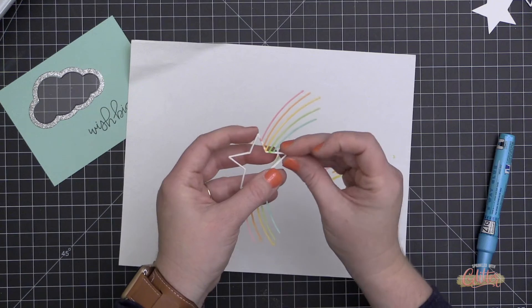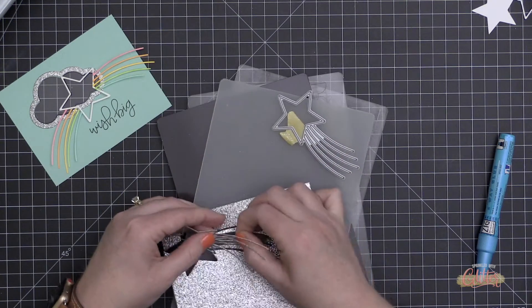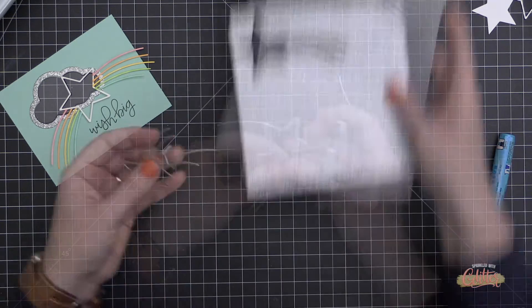Then I used some Zig Two-Way Glue Pen to stack the stars on top of each other. Because they're symmetrical, this works, and you can see I'm just kind of working it onto itself using my fingers to line up those edges.